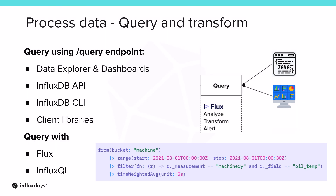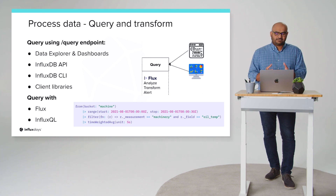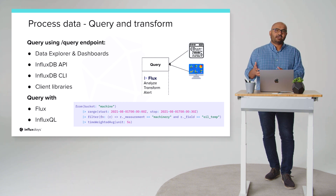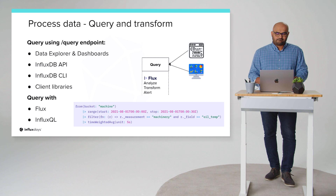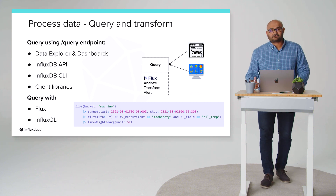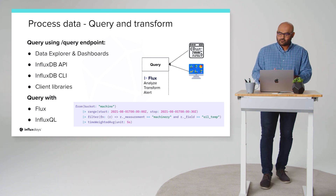Now that we have the data into the database, we obviously need to query it. You want to query the data to extract value from it. On the InfluxDB platform, you could use Flux or InfluxQL to make that happen — you can query and transform the data as you need. Extracting value could mean visualizing it on Data Explorer or dashboards in the UI, using a third-party visualization tool, or your application directly querying the database. For all of this, you can use the query endpoint directly.